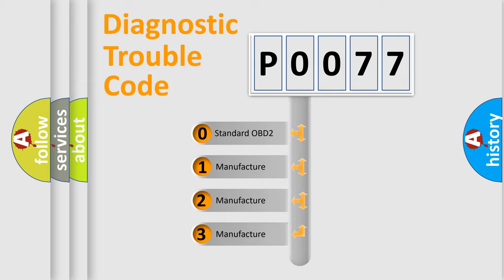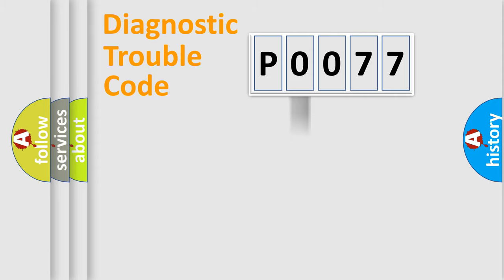If the second character is expressed as zero, it is a standardized error. In the case of numbers 1, 2, or 3, it is a manufacturer-specific expression of the car-specific error.